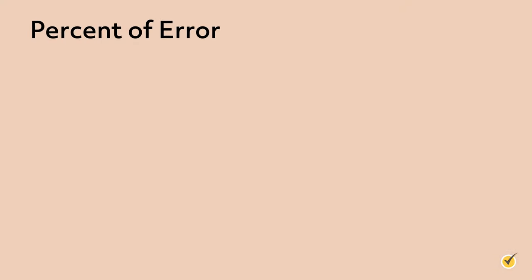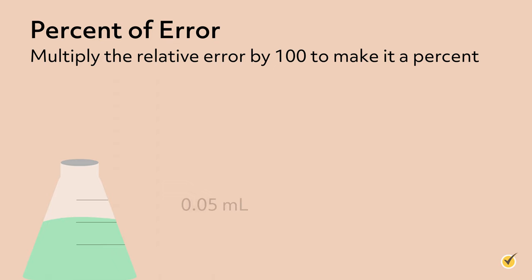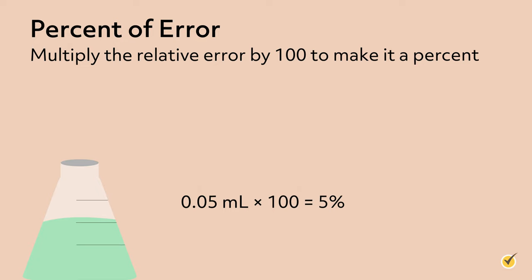A third way to represent errors in measurement is by calculating the percent of error. To find the percent of error, multiply the relative error by 100 to make it a percent. In the chemistry example, the relative error was 0.05 milliliters. 0.05 × 100 = 5, so the percent of error in this experiment is 5 percent.